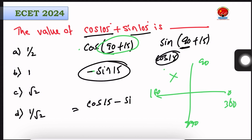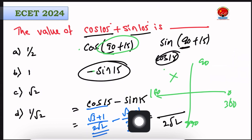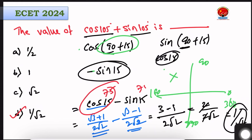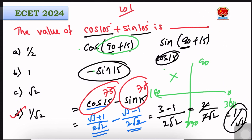So cos 105 plus sin 105 equals cos 15 minus sin 15. Using cos 15 equals (√3 plus 1) by 2√2 and sin 15 equals (√3 minus 1) by 2√2, and applying a plus b times a minus b equals a squared minus b squared, we get (3 minus 1) by (2 times 2√2), which simplifies to 2 by 2√2, giving 1 by √2. The remaining questions will be discussed in the next video. Thank you.